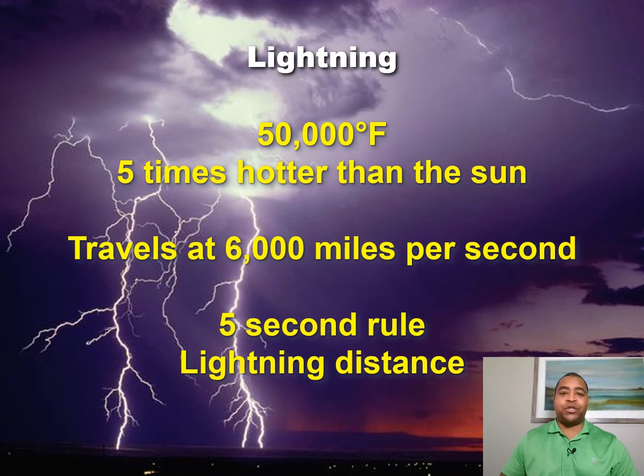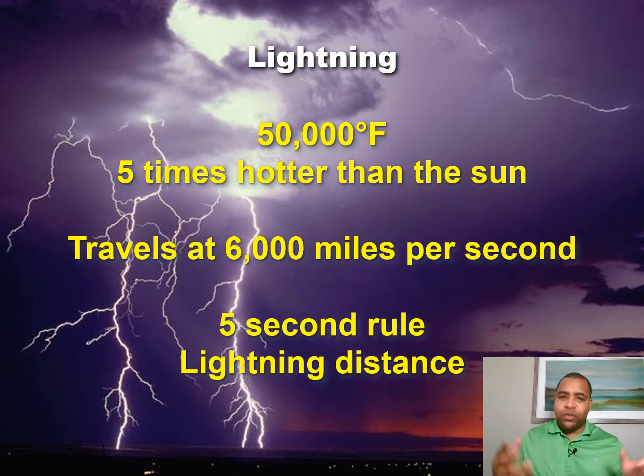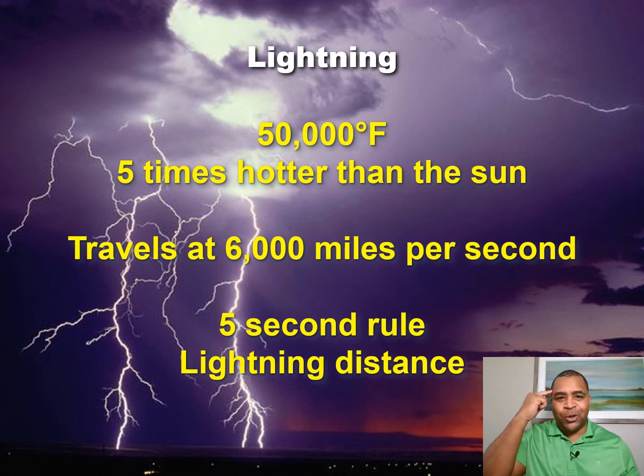Lightning travels at about 6,000 miles per second. To give you an idea of how fast that is, if you try and take a picture of lightning with your regular cell phone, usually you can't because it's moving that quickly. By the time you see it with your eye and it sends that signal from your eye to your brain to your finger to push the button — boom, it's gone. That's how quickly that lightning is moving.